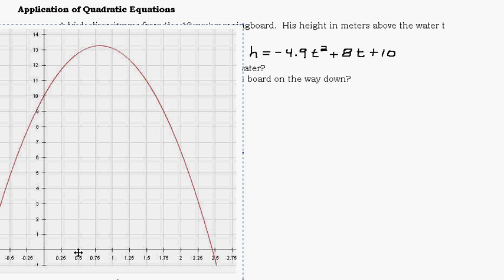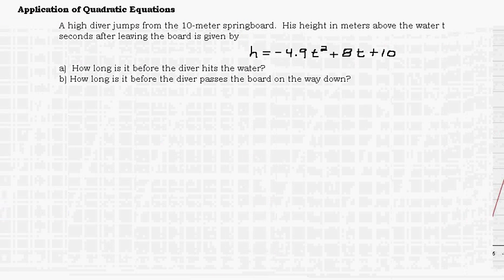We could analyze this a little bit and say, after 0 seconds, which means he hasn't jumped at all, he is 10 meters above the water, which makes perfect sense because he's on a 10-meter springboard. After a half a second, he's going to be not quite 13 meters above the water. After 2 seconds, he's going to be about 6.5. Our first question is, how long is it before he hits the water? Or in other words, his height above the water is 0. So our first question is asking us to find this point right here, which we know as the x-intercept. To find the horizontal intercept, we need to set h equal to 0.